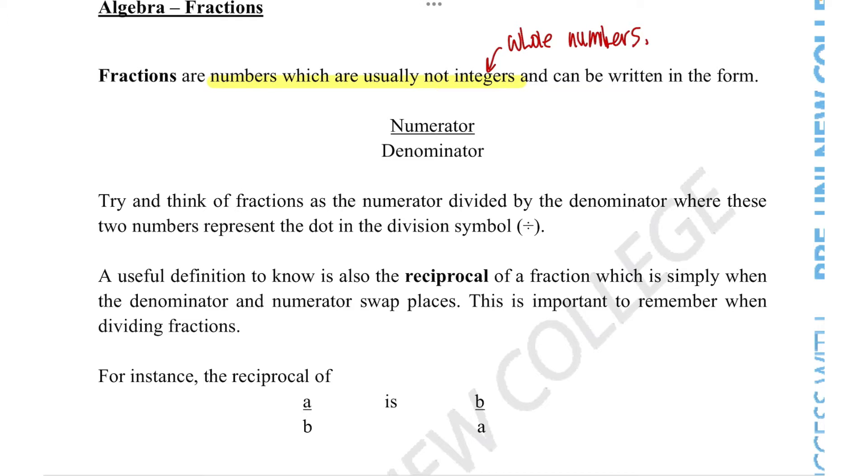So these fractions are generally going to be parts of a number, and that part is represented using this structure. So the numerator is whatever number is on top of the fraction, and it's basically the number of parts that we have. The denominator is the number that goes in the bottom of the fraction, and it represents the number of parts the whole number is divided into.